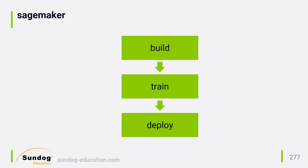Finally, you place your trained and tuned model into production with the deploy step. This also spins up one or more servers in AWS that will make predictions on demand using your model. Again, this too is not free. You'll be charged for computer time for as long as your model is deployed, so you need to remember to shut down your model's deployment when you're done with it, or you'll have a nasty surprise on your credit card bill at the end of the month.